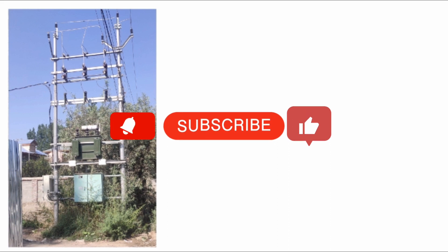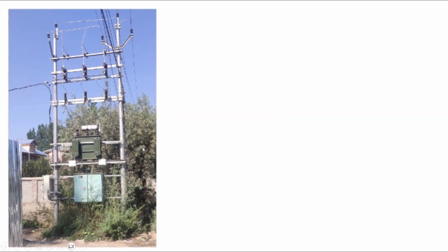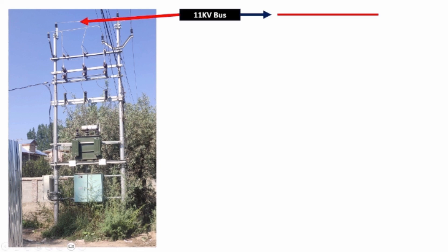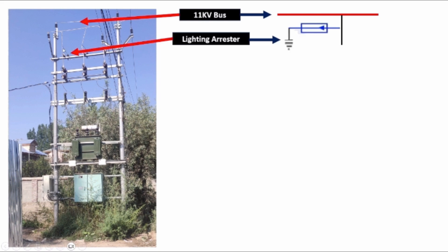This is the 11 by 0.4 kV distribution substation. The first thing is this 11 kV bus, which can be represented in the SLD by a straight line like this. After that, the connections are going down and get connected to the lightning arrester. This is the lightning arrester. This is the pin insulator and this one is the lightning arrester. The lightning arrester symbol is like this.